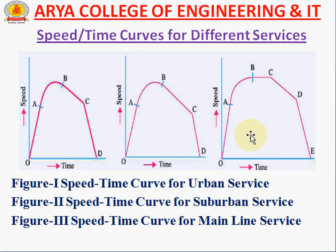Figure 3 is the speed-time curve for main line service, where the kilometers traveled are very high. Here, all phases are present: first acceleration, then the speed curve, followed by free running, then coasting, and finally braking. All procedures of the full system are used for main line stations.